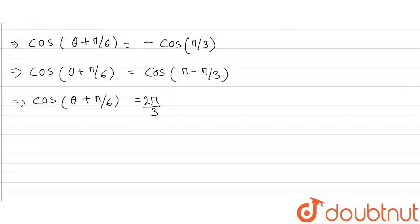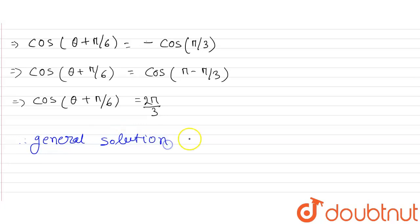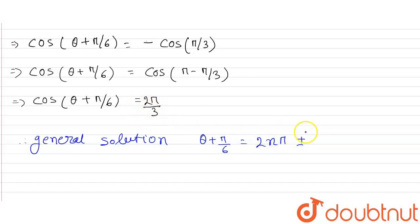Therefore, for the general solution, we have the general solution formula: θ + π/6 equals to 2nπ ± α, where α equals 2π/3. We can satisfy different conditions using the plus and minus cases.